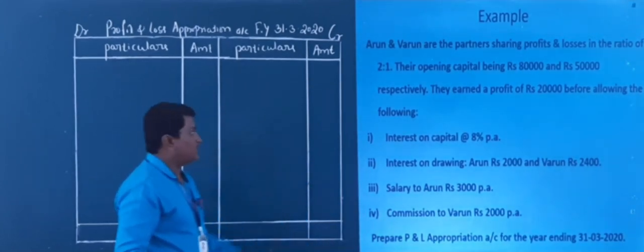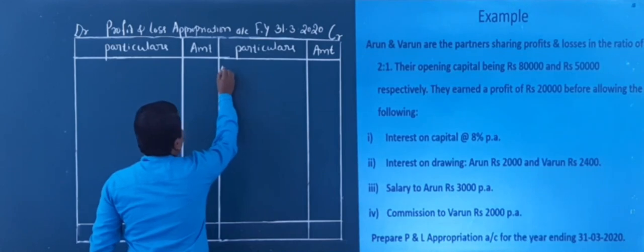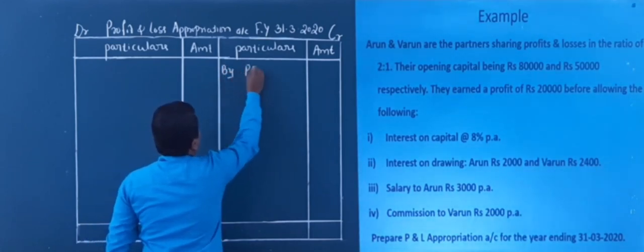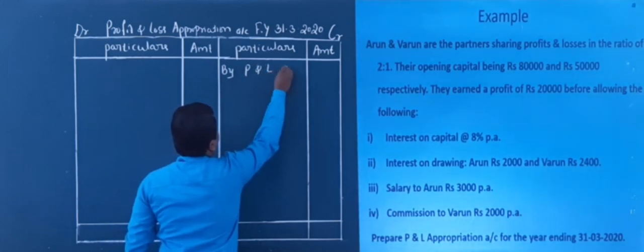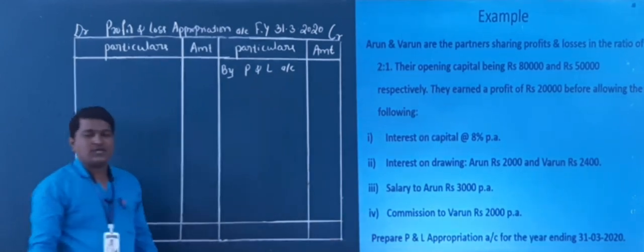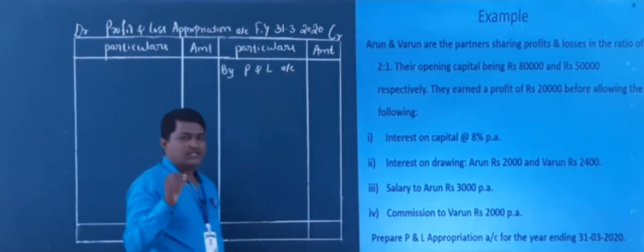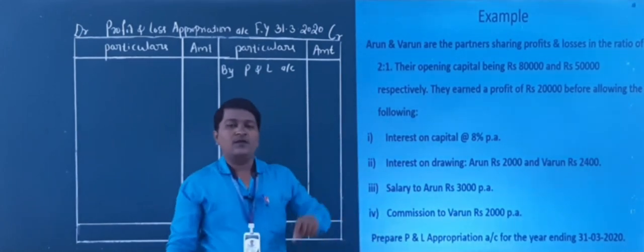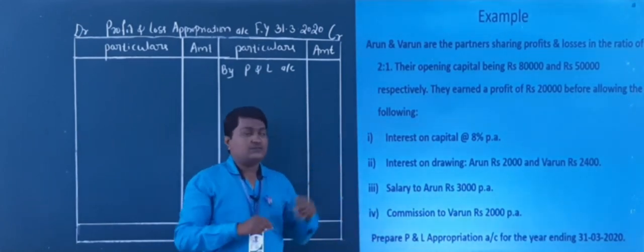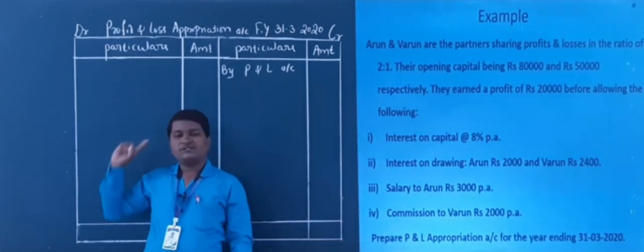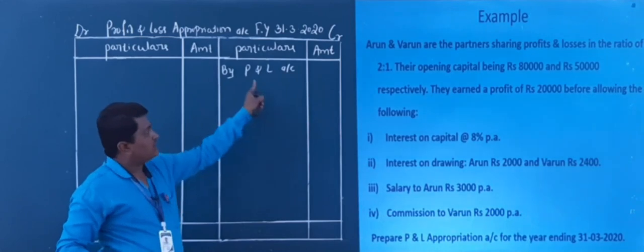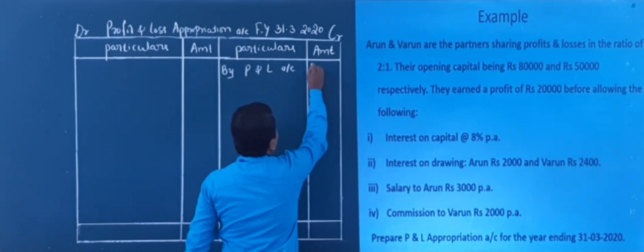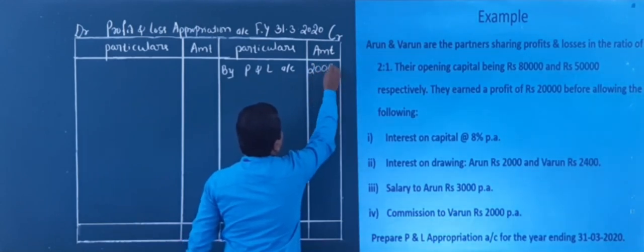I transfer that profit at the credit side. I write 'By Profit and Loss Account' — shortly written as P and L — but you need to write Profit and Loss Account. The credit side always indicates profit, and if you go to the debit side it is loss. So profit is there — that's why we transfer to the credit side. The profit is 20,000.